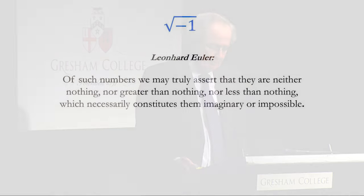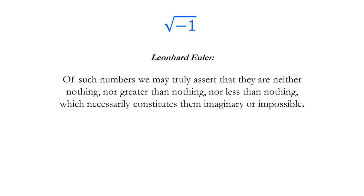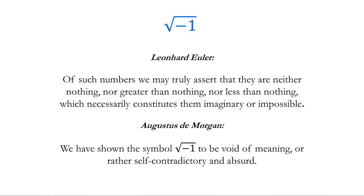In fact, many mathematicians in the 18th century, for example the great Euler, worked with this type of number. Euler said of such numbers: 'we may truly assert that they are neither nothing, nor greater than nothing, nor less than nothing, which necessarily constitutes them imaginary or impossible.' Even in the 19th century, there was still a great deal of unhappiness about complex numbers. Augustus de Morgan, Professor of Mathematics at University College in London declared: 'we have shown the symbol, the square root of minus one, to be void of meaning, or rather self-contradictory and absurd.' But however strange complex numbers were, they were of great use, for example in solving quadratic and other equations.